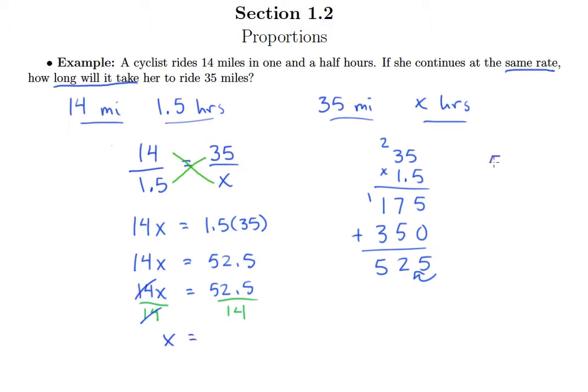So x equals 52.5 divided by 14. So 14 goes into 52. Let's see. 14 is not one of our special product values that we would memorize, but what we can do is think about 7. 7 would only go into 52 7 times, and 7 is exactly half of 14. And so 14 would go in about half of 7 times. But of course, half of 7 isn't a whole number. So half of 7 is 3 and a half. So let's guess 3 for how many times 14 goes into 52.